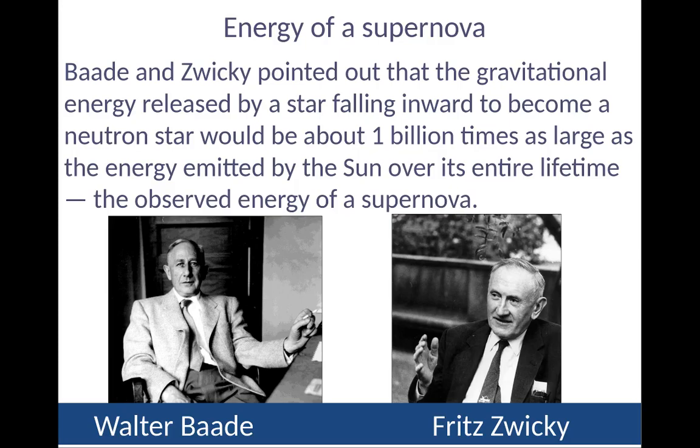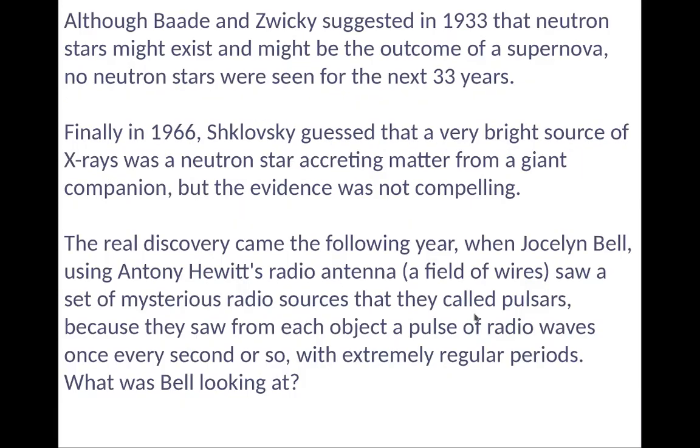Walter Bay and Fritz Wicke pointed out that the gravitational energy released by a star falling inward to become a neutron star would be 1 billion times as large as energy emitted by the sun over an entire lifetime, which is roughly observed energy of the supernova. Bay and Zwicky suggested in 1933 that neutron stars might exist and might be the outcome of a supernova, but no neutron stars seen in the next 33 years.